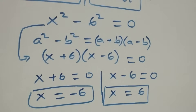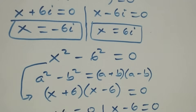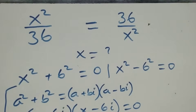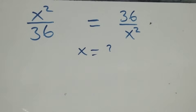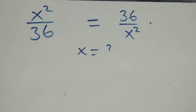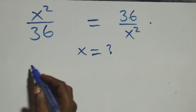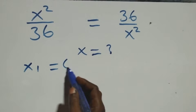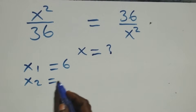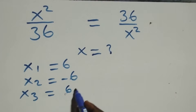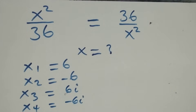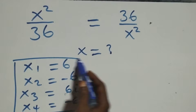We have two real solutions and two complex solutions. Writing them all out: x₁ equals 6, x₂ equals minus 6 — the two real solutions — and x₃ equals 6i and x₄ equals minus 6i, the two complex solutions, making four solutions in total.